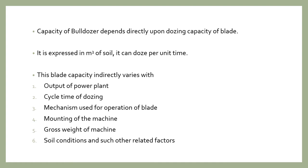The blade capacity is indirectly influenced by: (1) output of the power plant, (2) cycle time of the dozing, (3) mechanism used for operation of the blade, (4) mounting of the machine, (5) soil condition, and (6) gross weight of the machine. The blade capacity — how much soil it can doze in meter cube per second — depends on these six factors.